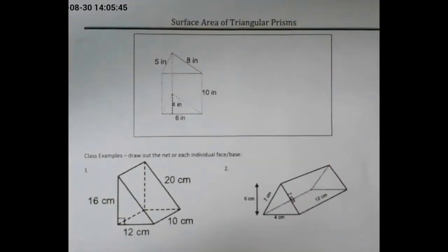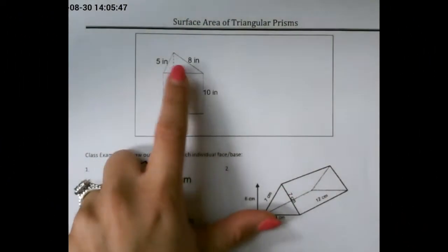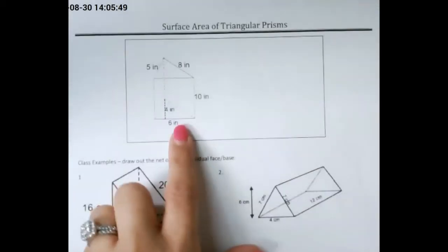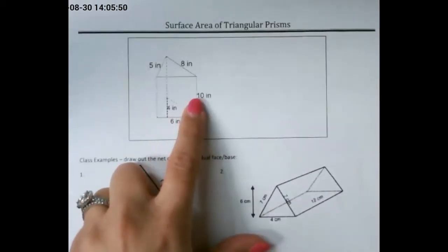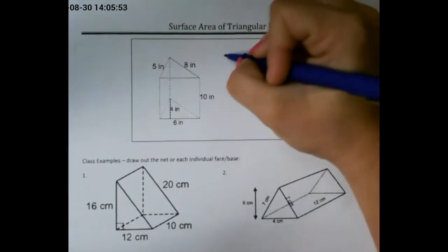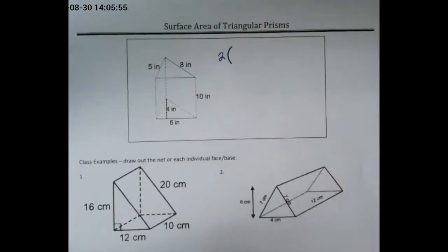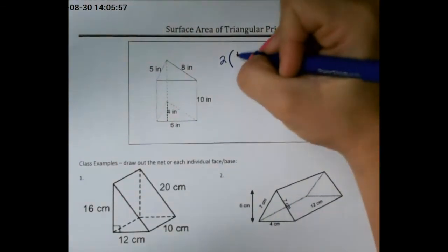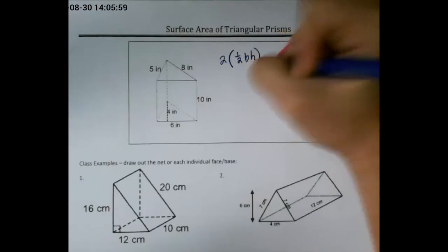Let's talk about finding the surface area of a triangular prism. A triangular prism is made up of two triangular bases and three rectangular faces, so we need to do two of whatever our formula is for a triangle, which is one-half base times height.